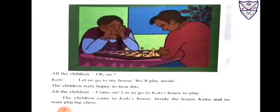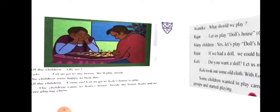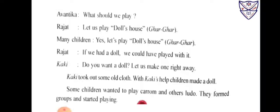Inside the house, Kakka and Foyi were playing chess. Avantika asked, 'What should we play?' Rajat suggested, 'Let us play doll's house.' Many children agreed, 'Yes, let's play doll's house!' Then Rajat added, 'If we had a doll, we could have played with it.'